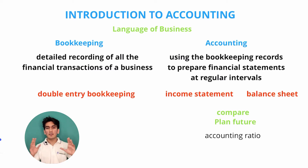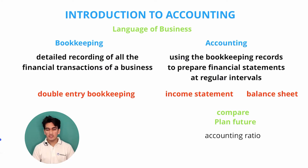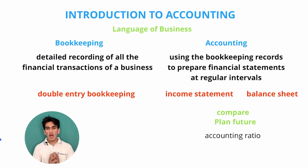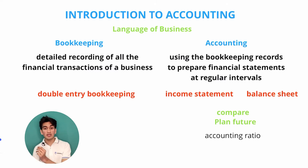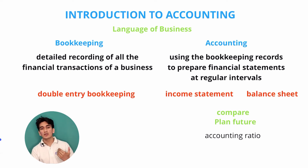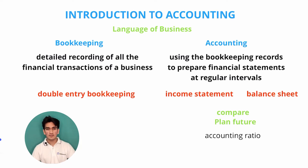Bookkeeping follows a double entry format. This means that each and every single transaction will have two impacts on the business. For example, if I purchase an eraser, my bookkeeping records will have two impacts. My stationery account will be debited by $1, and at the same time my bank account will be credited by $1. The stationery account is debited because an eraser is added, while the bank account is credited because money is taken out to pay for the eraser. Similarly, all transactions have two impacts on the business's books.